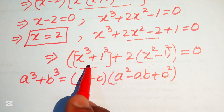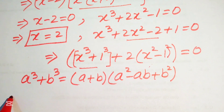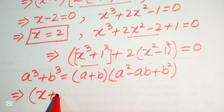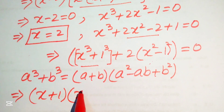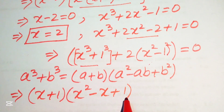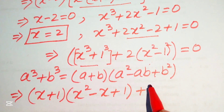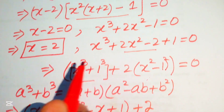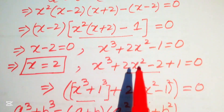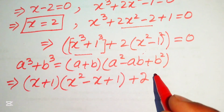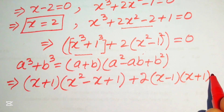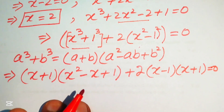Applying the sum of cubes formula: x³ + 1 = (x + 1)(x² - x + 1). And 2(x² - 1) = 2(x - 1)(x + 1). So the equation becomes (x + 1)(x² - x + 1) + 2(x - 1)(x + 1) = 0.